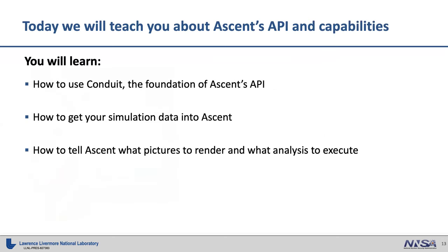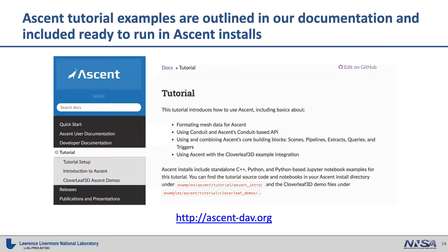Today we're going to teach you about Ascent, its API, and what you can do with it. You'll learn how to use Conduit—that's how we talk to Ascent. You'll learn how to get your simulation data into Ascent. We have an easy path for MFEM and AMReX folks, but we'll show what publishing data looks like. Then we'll show you how to tell Ascent to make pictures or do analysis. Our tutorial documentation has all these materials installed in Ascent installs on Summit and Perlmutter, and there's also a Docker container for the quickest way to play around.